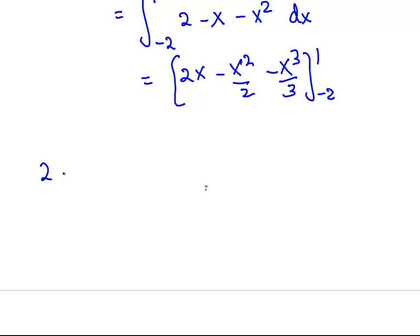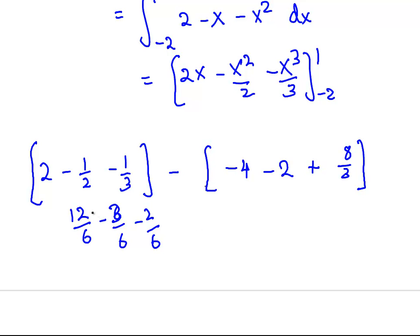And what do we get? That's 2 minus 1 half minus 1 third, that's the upper bound, minus minus 4, that's 2 times x when x is equal to minus 2, minus 2, x squared is 4. 4 divided by 2 is 2, and we have minus x squared, so we have minus 2. And finally, minus 8 cubed over 3. The minus signs cancel out, so we just have 8 over 3. And now all we have to do is just do a bit of pen and paper calculator work. 12 over 6 minus 3 over 6 minus 2 over 6 on this side.